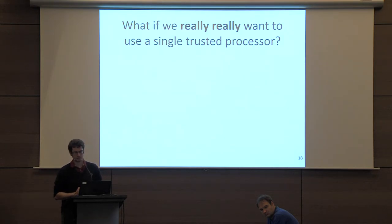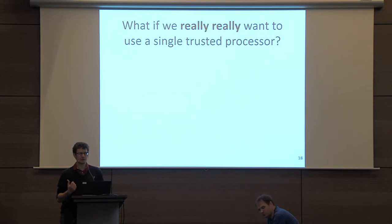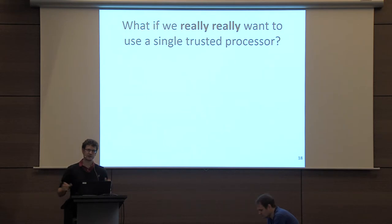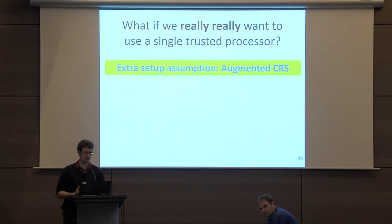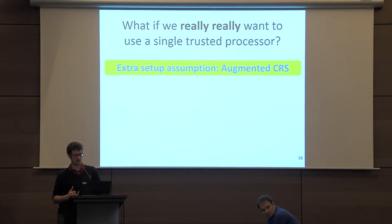One of the more technically interesting results is: what if we really wanted to do things with a single secure processor? This would be more interesting in practice if not every party had to have a processor from the same manufacturer. Because of these impossibility results, we have to rely on extra setup assumptions. We go for an assumption already used in composable MPC: the notion of an augmented common reference string.